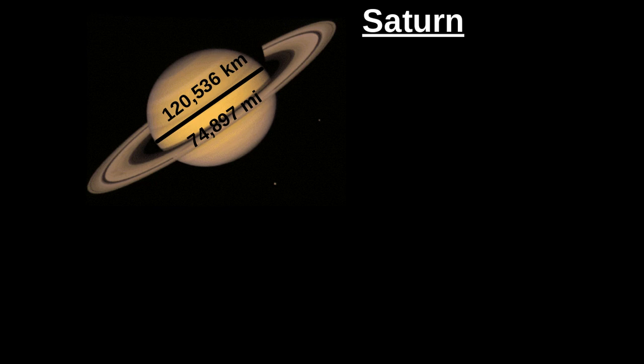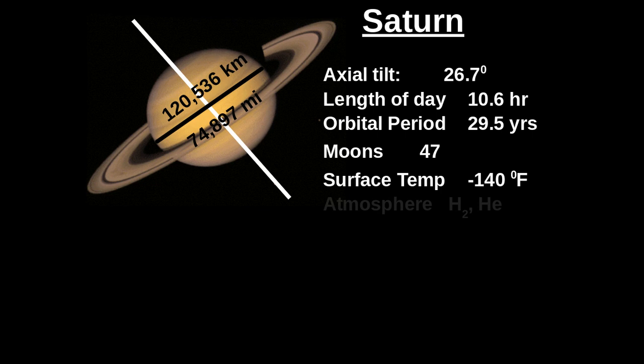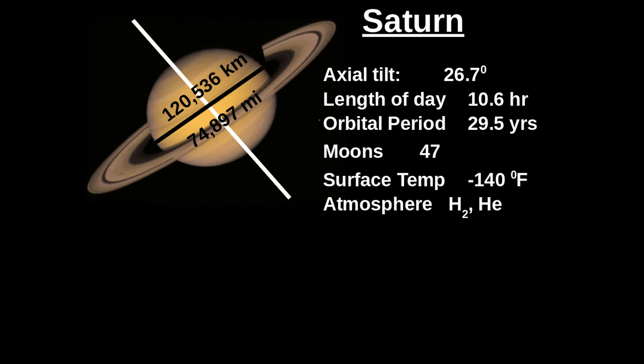Next is Saturn — 74,000 miles in diameter. Axial tilt is 26.7 degrees. Length of day is 10.6 hours, conforming to the gaseous planets in terms of spinning pretty fast. Orbital period is 29.5 years around the sun. 47 moons. Surface temperature is minus 140 degrees Fahrenheit. Atmosphere is hydrogen and helium — very gaseous, very light gases, very cold. Named after the Roman lord of the rings. Saturn is 887 million miles from the sun.